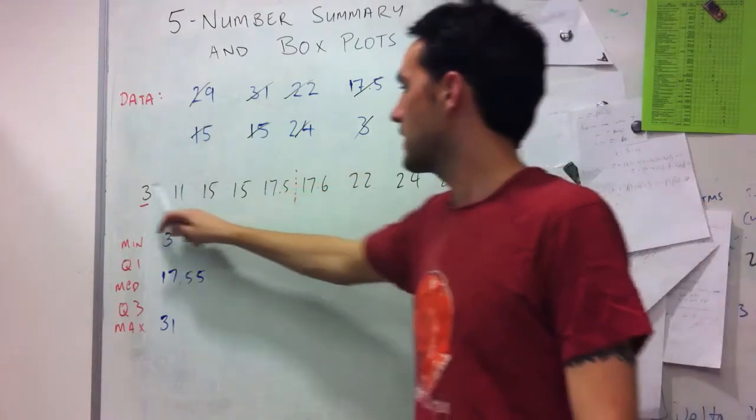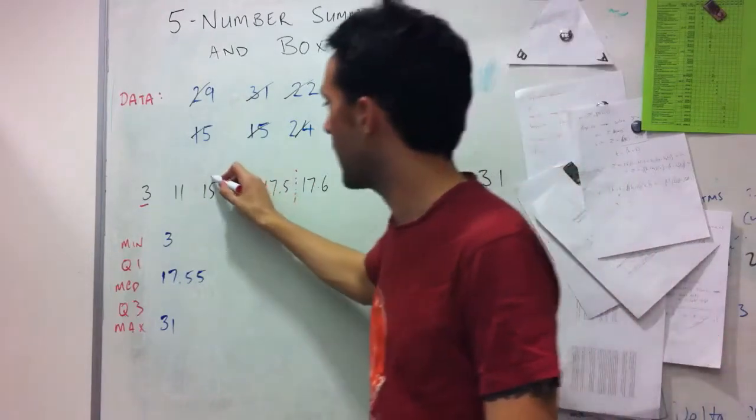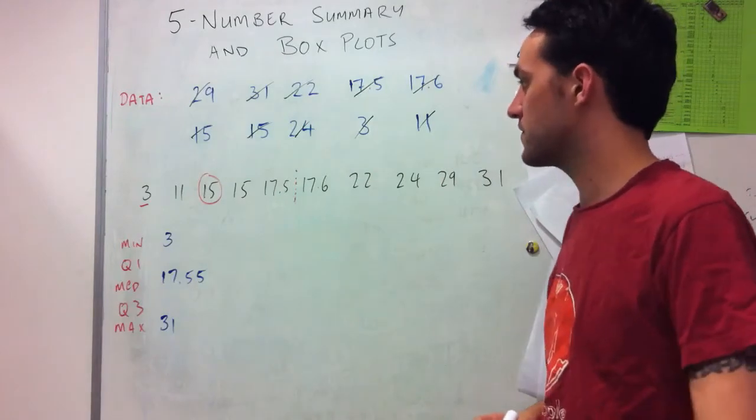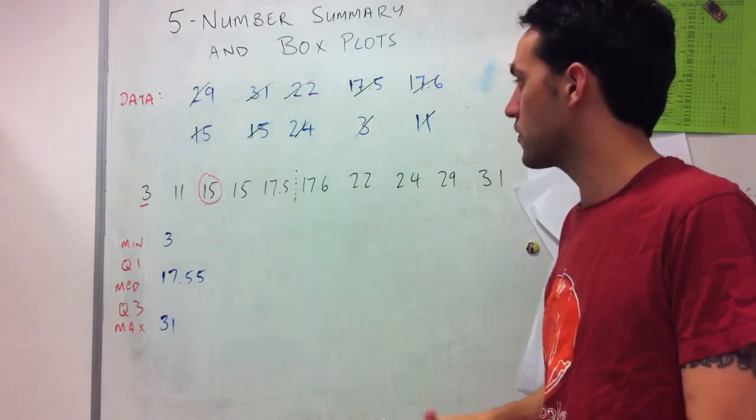So we have 5 data here. Breaking that in half actually gives me, since 5 is an odd number, it gives me this 15. So that's my value for Q1.